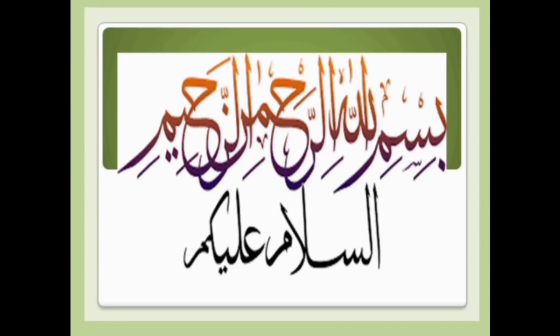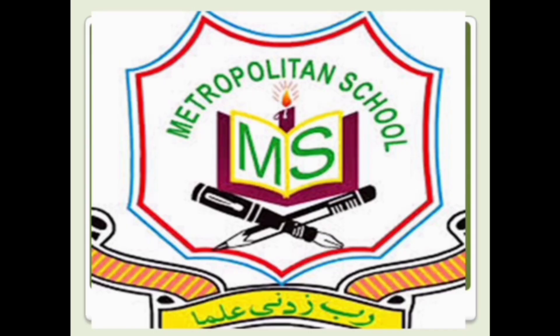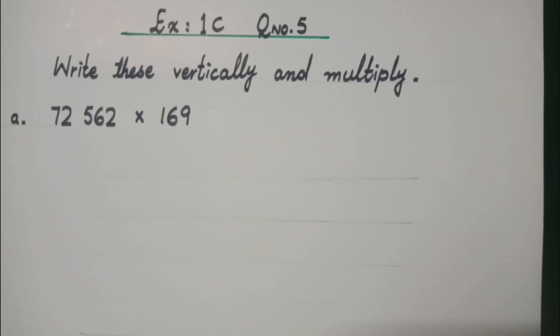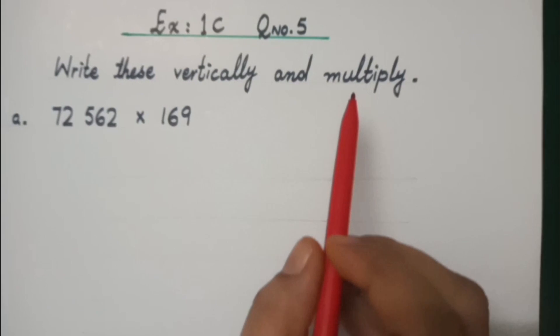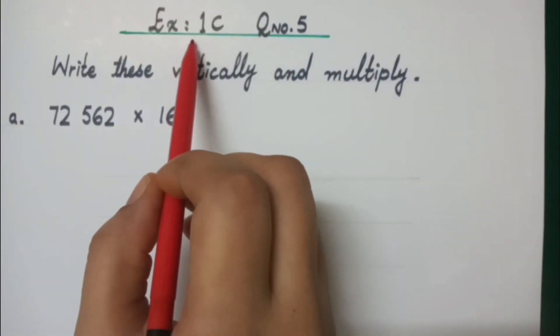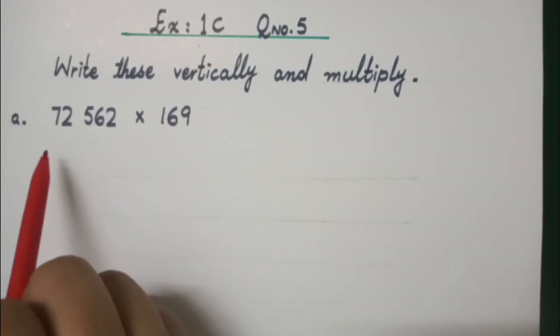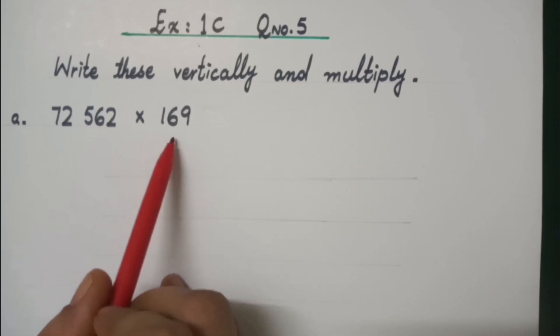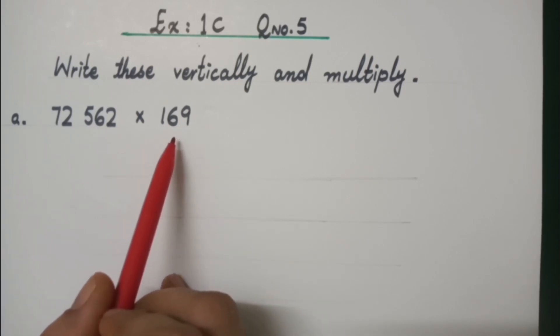Bismillah ar-Rahman ar-Raheem. Assalamu alaikum wa rahmatullahi wa barakatuhu. I'm Miss Sahar here from Metropolitan School. It's Maths time now for class 4. Let's review some multiplication by solving question number 5 from exercise 1. The question is 72,562 multiplied by 169.